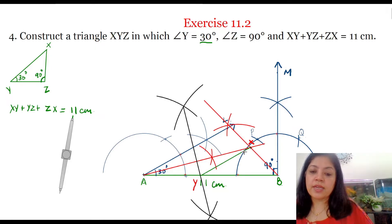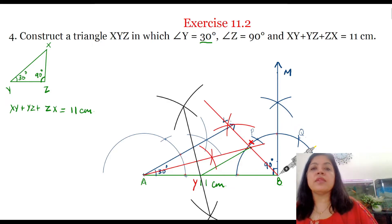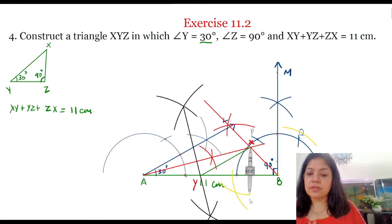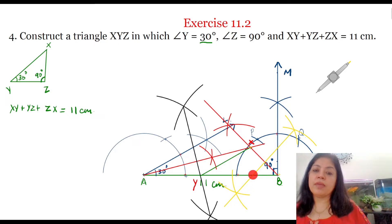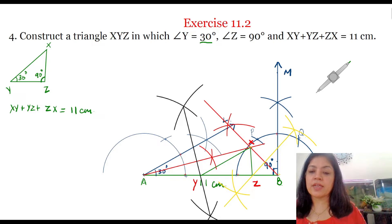To get the third vertex, we'll draw the perpendicular bisector of BX. Place the compass at B and with a radius greater than half of BX, draw two arcs above and below BX. With the same radius, place the compass at X and draw two arcs intersecting those arcs above and below XB. Join these two points of intersection to get the perpendicular bisector of BX. This perpendicular bisector of BX meets line AB at a point, and this point is the third vertex — vertex Z of the triangle XYZ. Join ZX to get the third side.